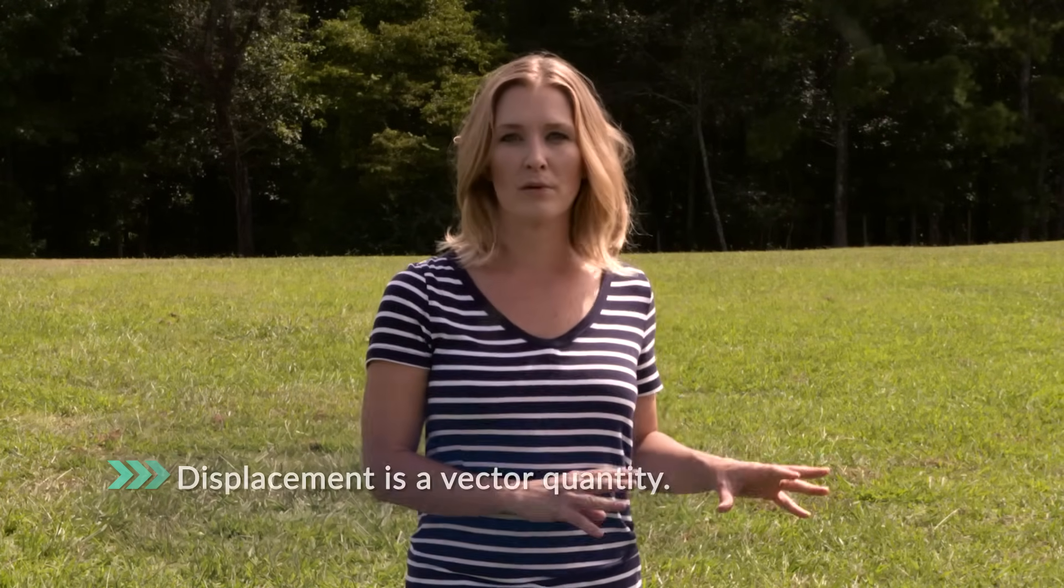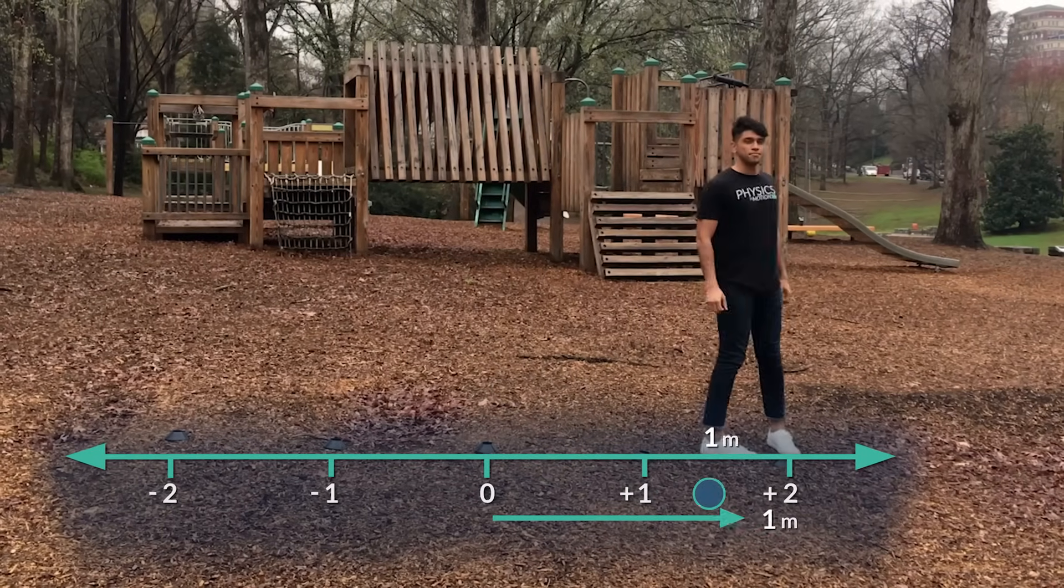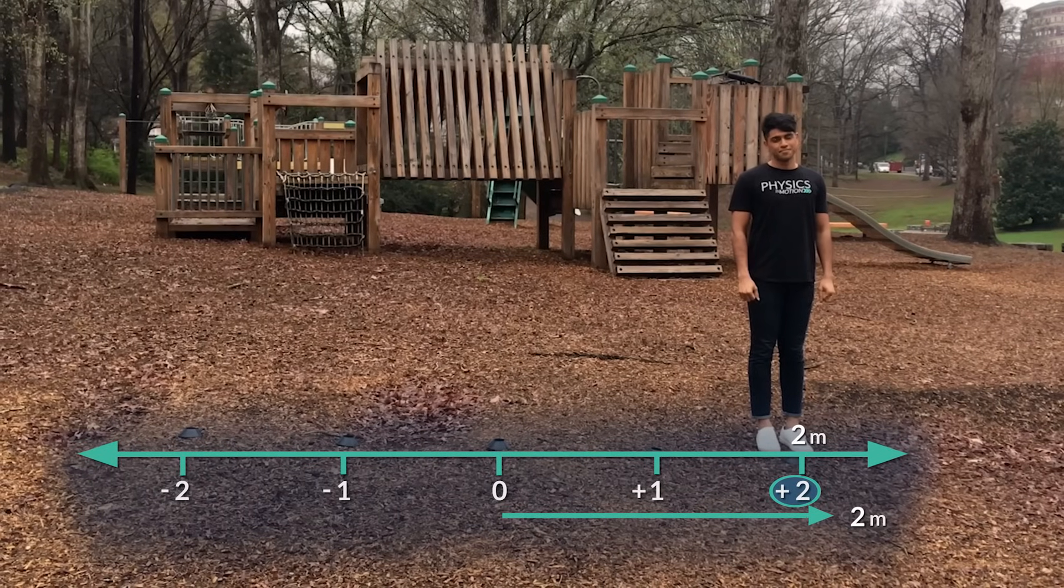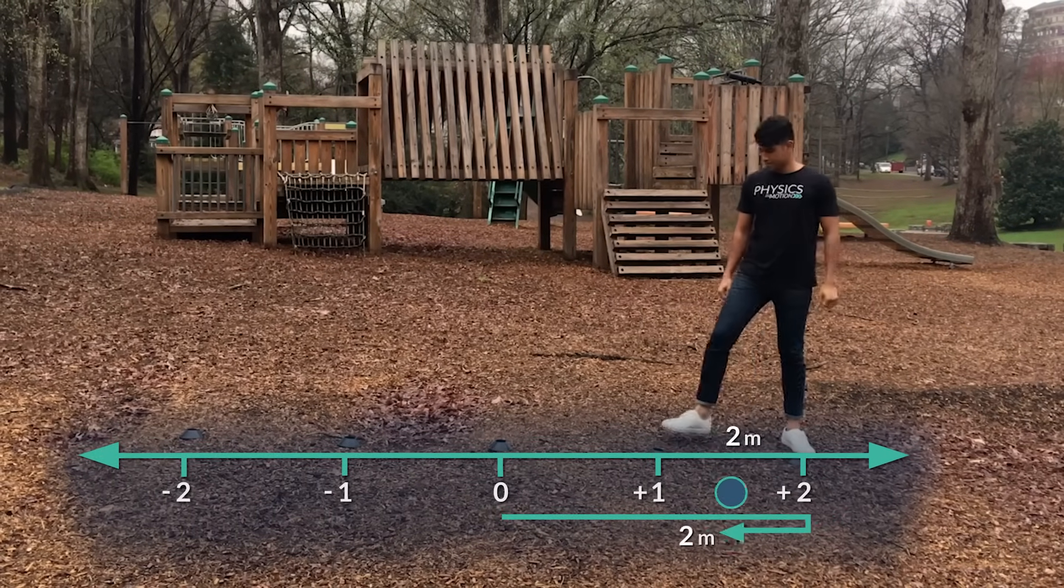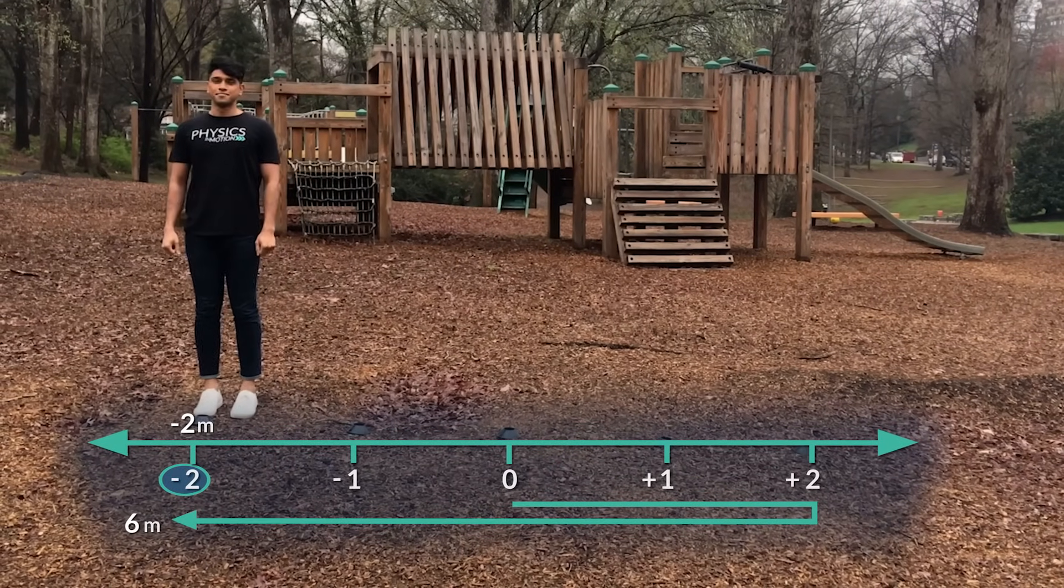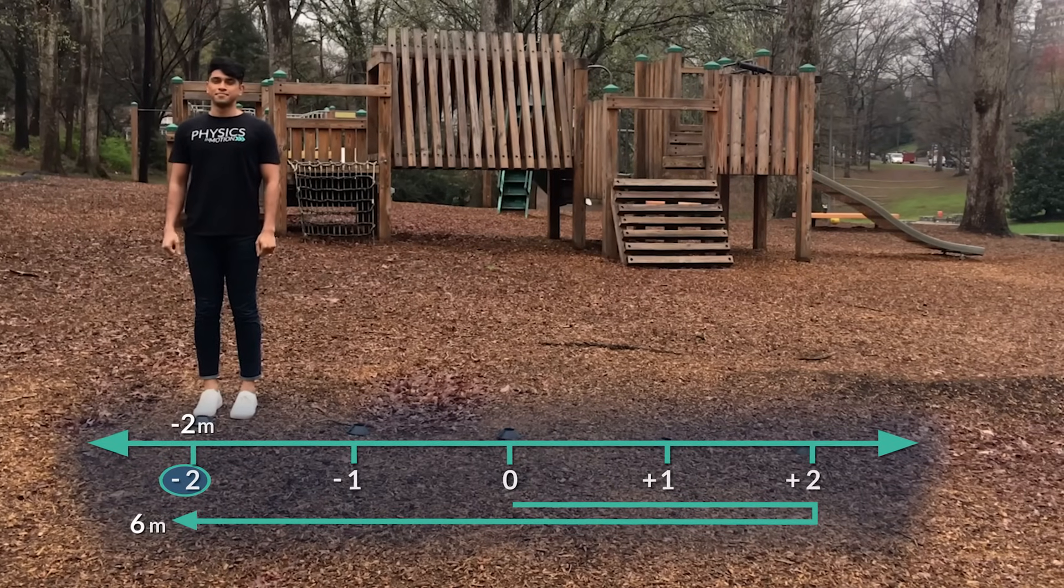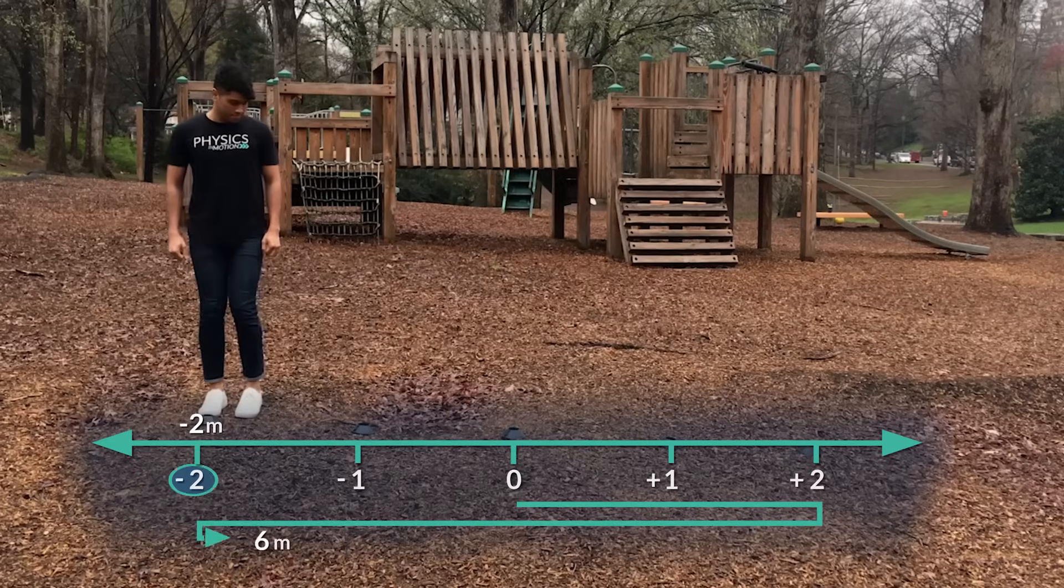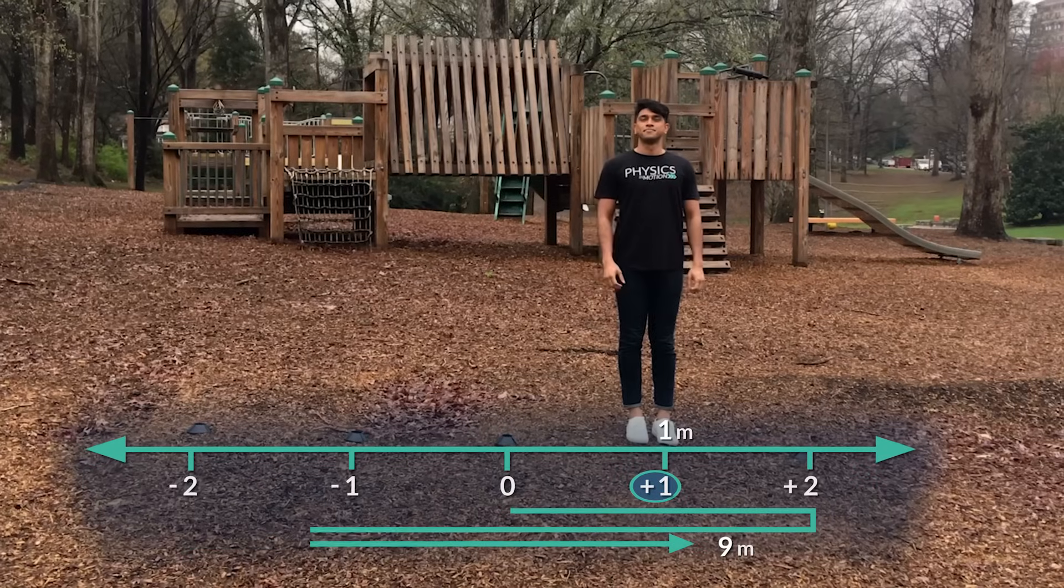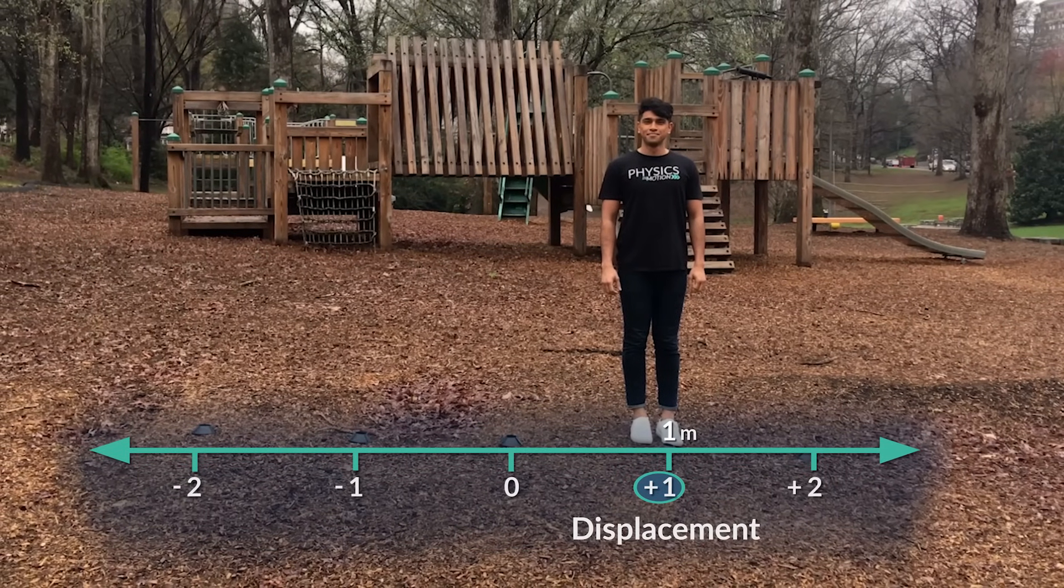So let's go back to our number line. If Onzer moves two meters this way, the distance he moves is two meters, just like before. But his displacement is two meters to the right. Now, if he moves four meters in the opposite direction, the total distance he's traveled since starting is six meters. However, his displacement is negative two meters. So if he moves three meters to the right, again, his distance adds up to nine meters. But his displacement for the whole journey is one meter to the right.